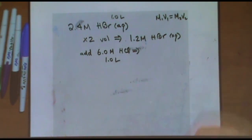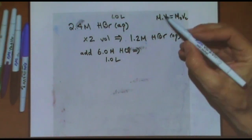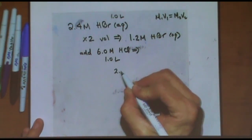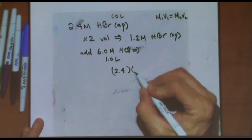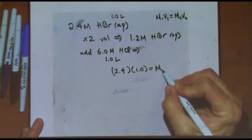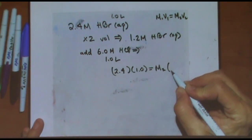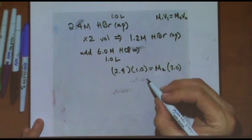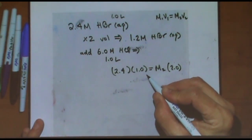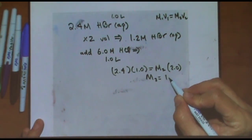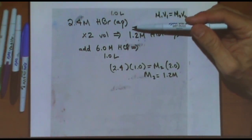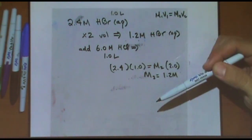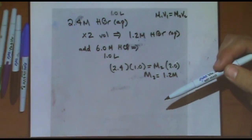It's totally irrelevant. Look at the formula. Initial molarity is 2.4. What's the initial volume? One. The final molarity we don't know. What's the final volume? Two. So what happens to the molarity? It goes down by half. It's the same problem as the previous one — I double the volume, it doesn't matter how I double it, it goes down by half.